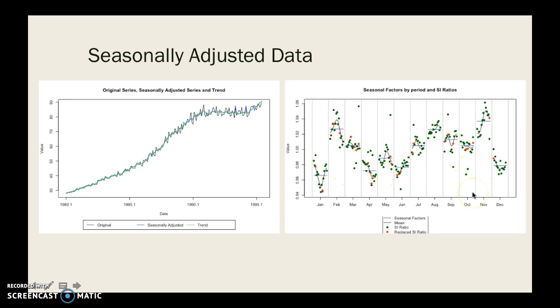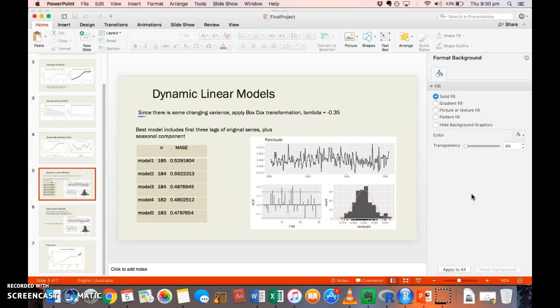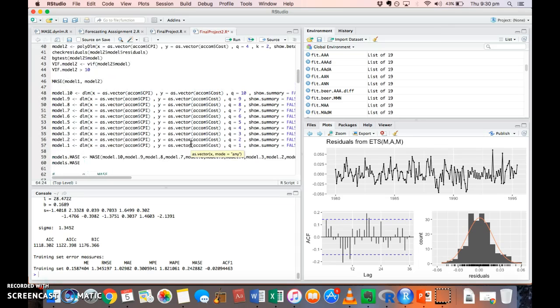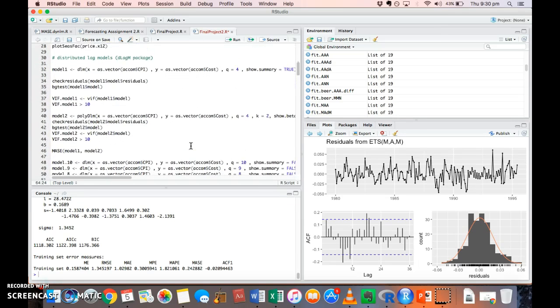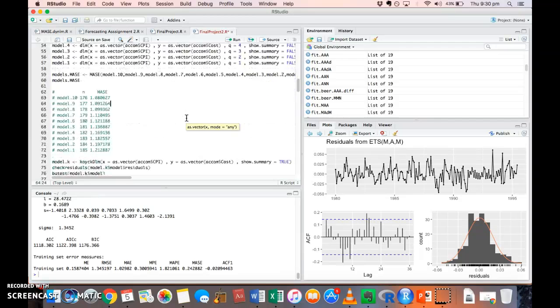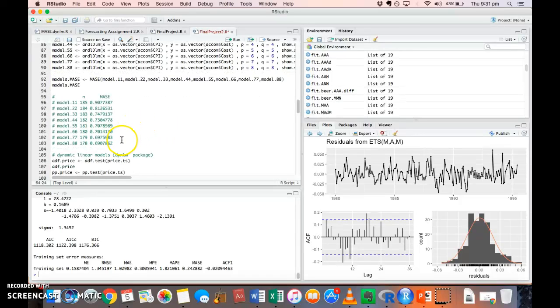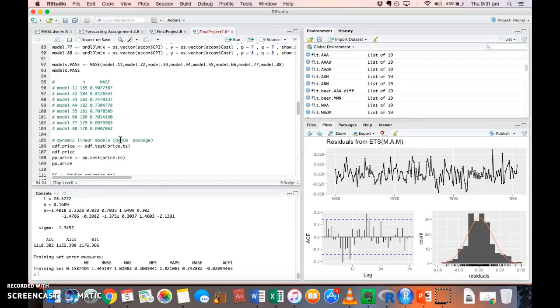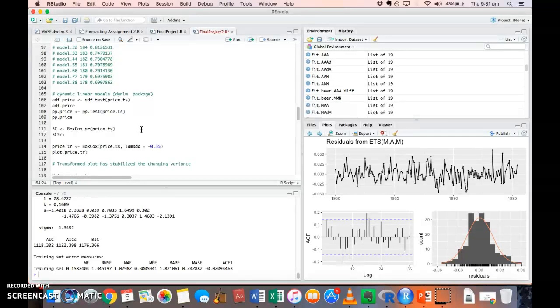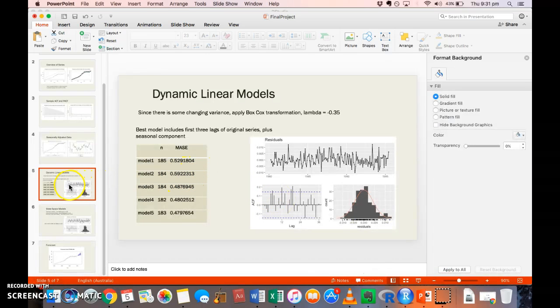Now I'll jump over to RStudio for a second. I initially tried modeling some distributed lag models to start with. They didn't really give the best MASE values, so for the purposes of this presentation, I've just skipped over those and started with the dynamic linear models.